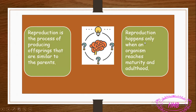Reproduction happens only when an organism reaches maturity and adulthood. We have a certain stage where reproduction can happen; before this stage it will not happen. Stages of living things start with a baby — this baby can be a newborn such as a mammal, or it can be an egg. Then the newborn grows and will be young.